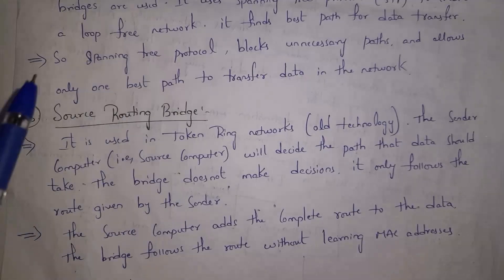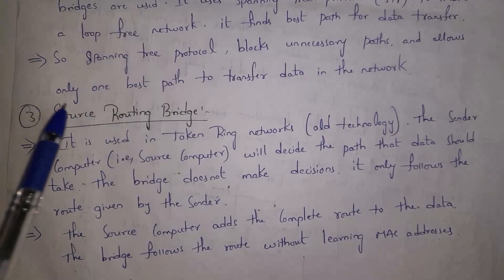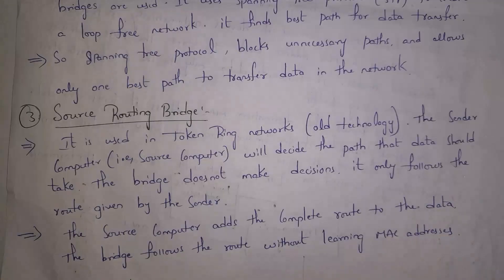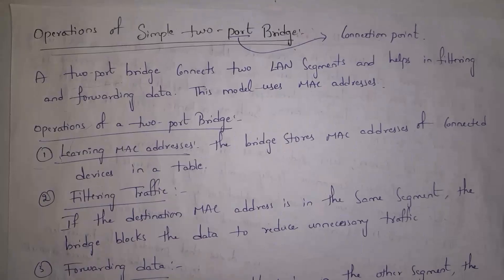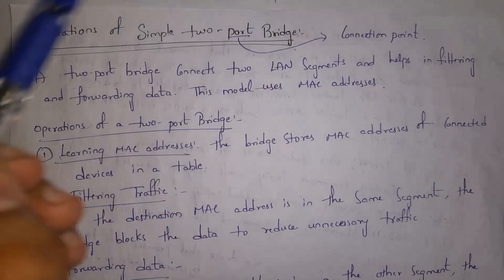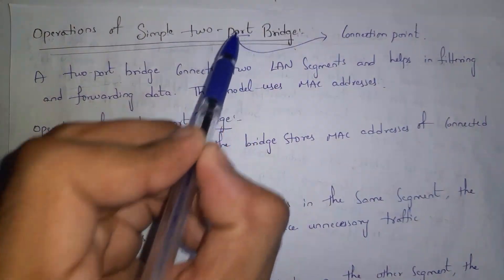The third type is the source routing bridge. The name says it all — the bridge does not find the best route; instead, the source computer finds the best path. The bridge simply follows the route given by the sender and forwards the data. In source routing bridge, the bridge does not maintain MAC addresses of devices.